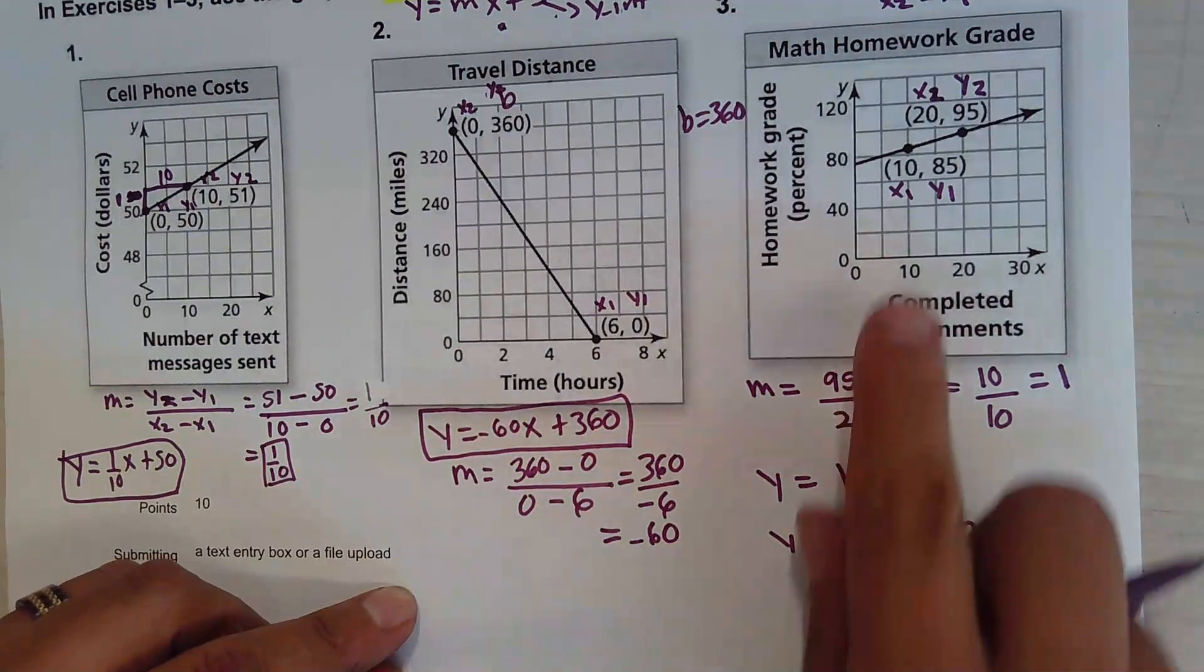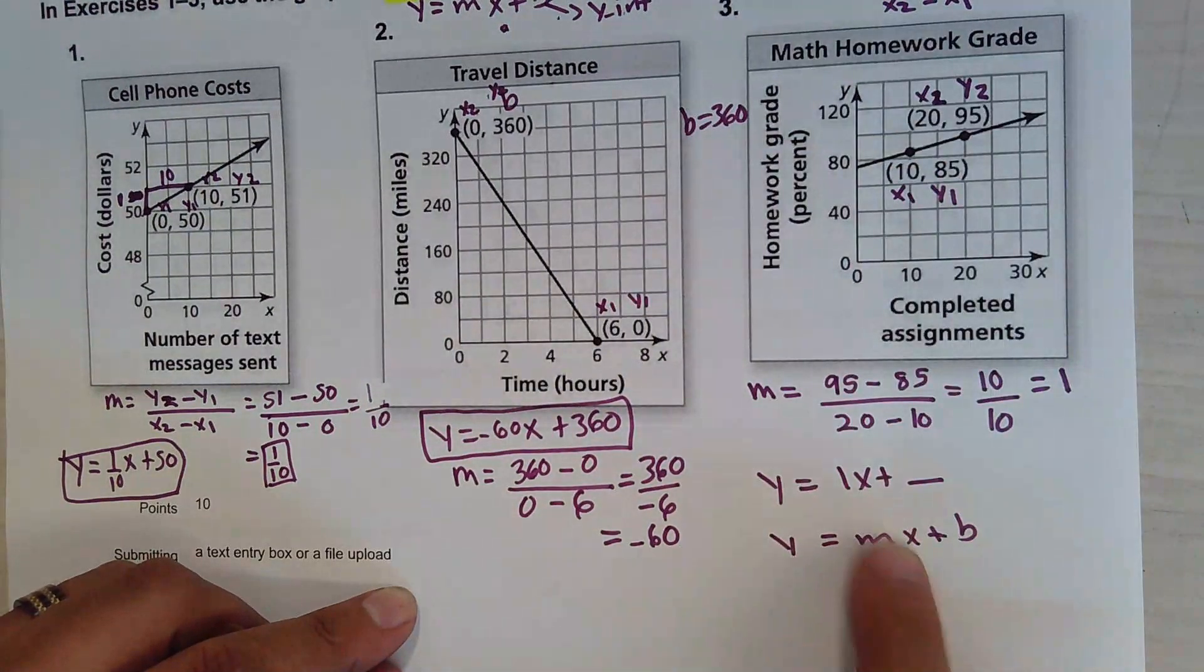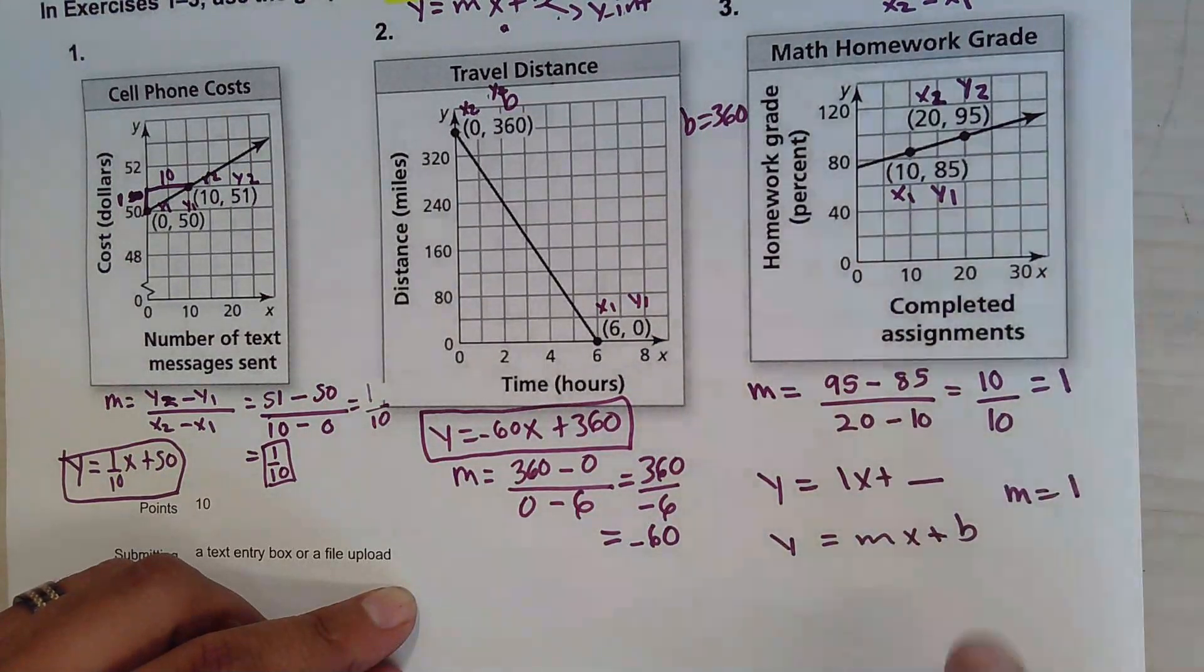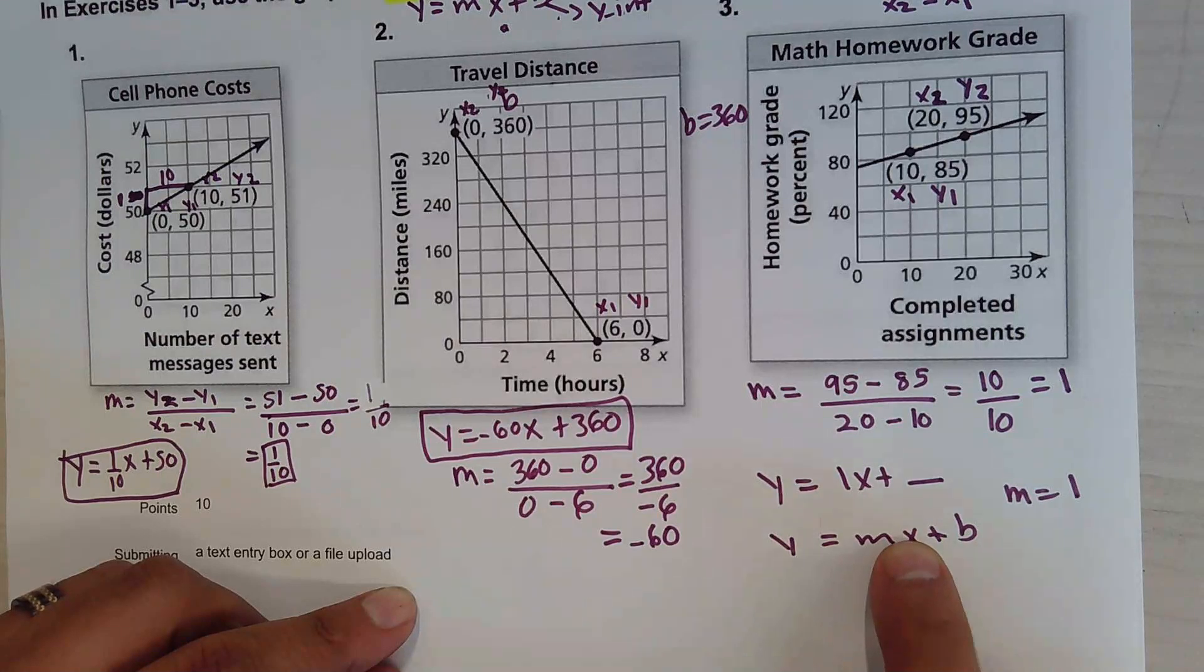Since we know the two points and we know the slope, we can use the slope here to find the missing y-intercept. Since we do know a point, we're going to pick the point